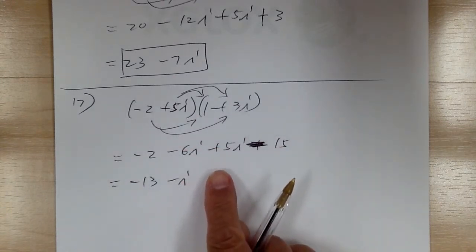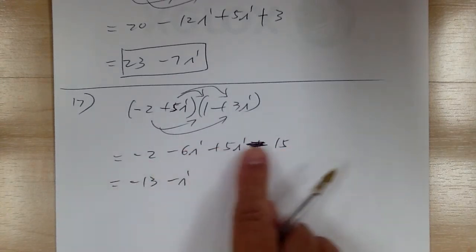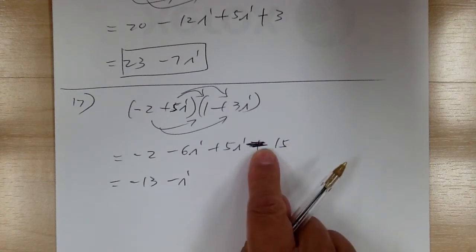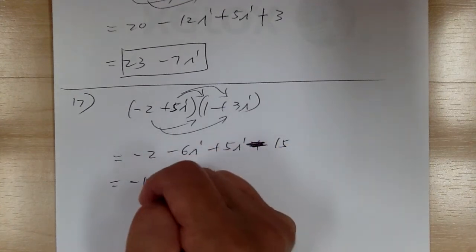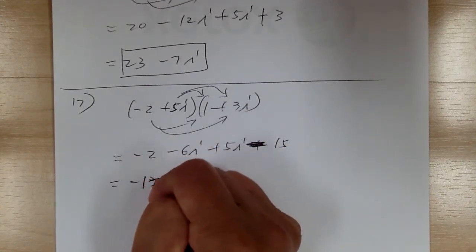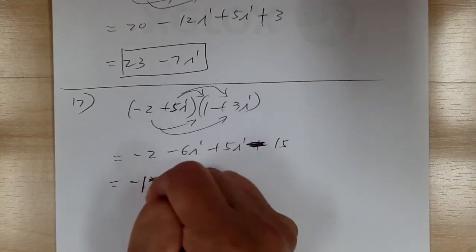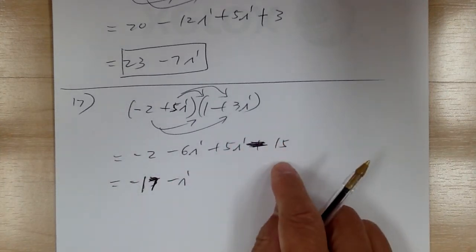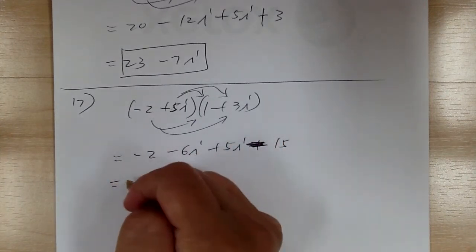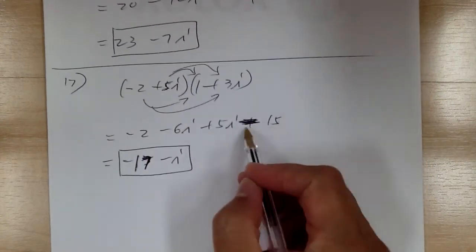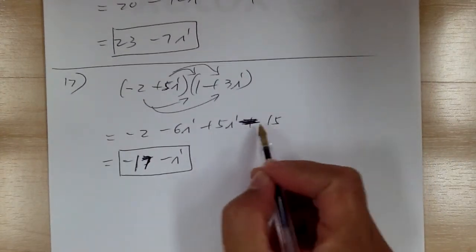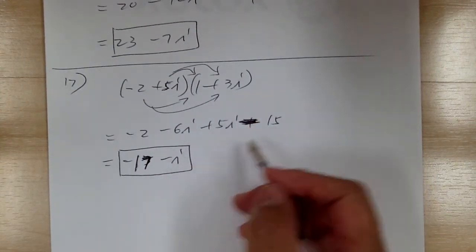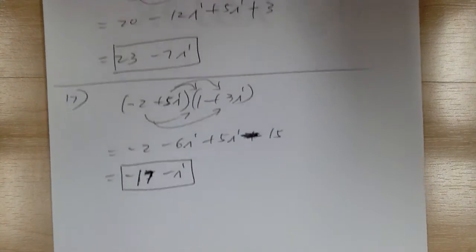Let me double check — be careful here. Negative 2 and negative 15: this is a minus, so it would be negative 17. You have to watch for the sign. That's why you want to use a pencil — so when you use a pencil, you can erase and make it nice, and you don't make careless mistakes.